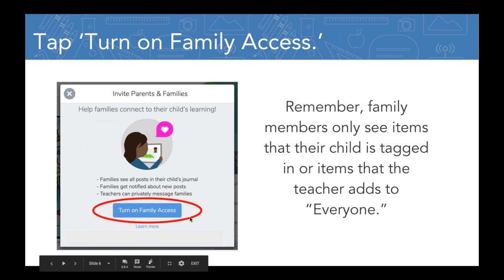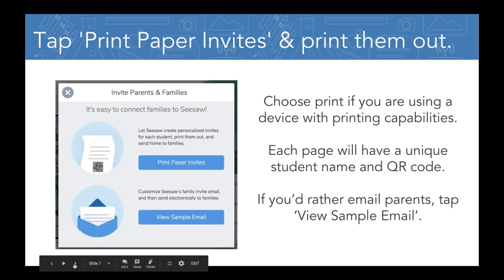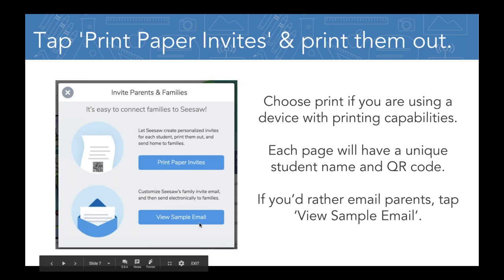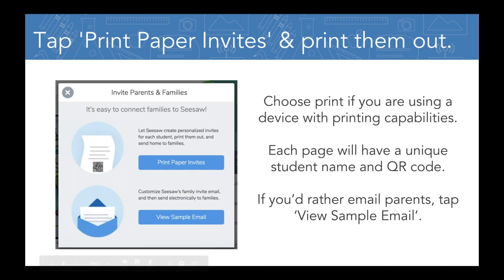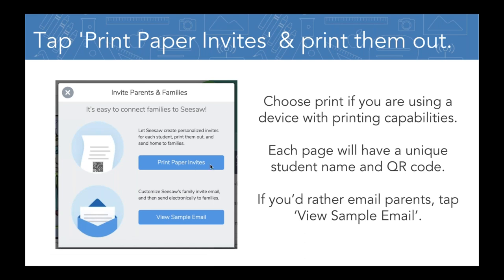You're going to click the 'Turn on family access' button, and then you'll have a couple of options. You can print paper invitations that are unique for each kid in your class, or you can send a sample email. I was teaching 11th and 12th graders and it was much more successful for me to send an email to parents. Big kids just aren't great at getting papers home — there's not the same system of taking a folder home and emptying it out every night.